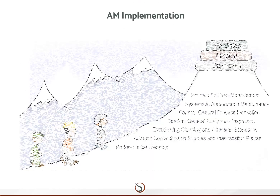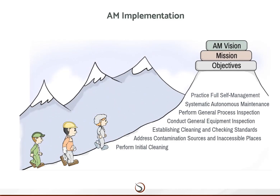To achieve AM vision, mission and objective, it is important to keep in mind that this requires a plan involving tools and techniques and the best use of resources, including people. This cannot be done all at once — it would be too overwhelming, uncontrollable and inefficient. Thus, autonomous maintenance is implemented in seven consecutive steps, starting with initial cleaning and proceeding steadily toward full self-management.